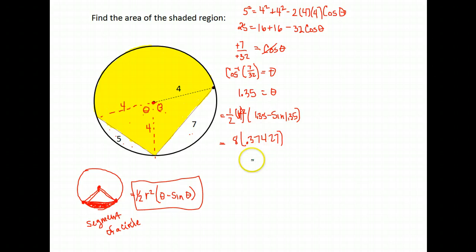Multiply that by my 8, and for the area of that segment I get an area of about 2.99. Okay, so this segment right here has an area of 2.99.